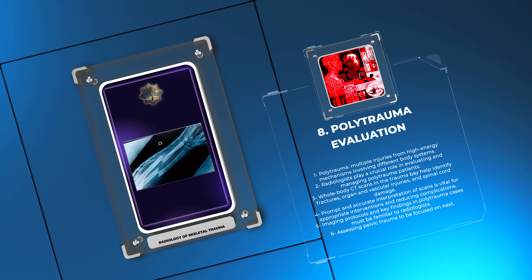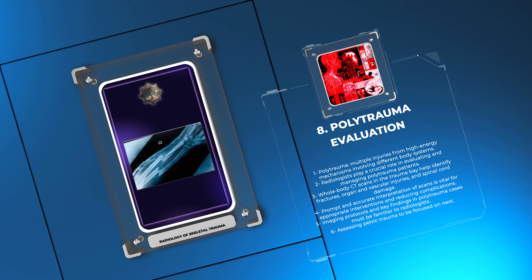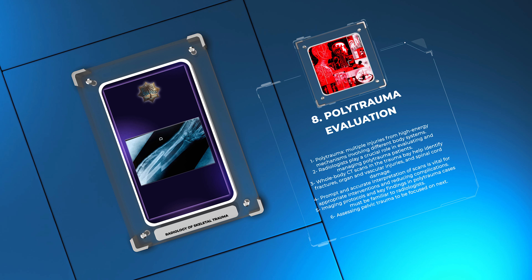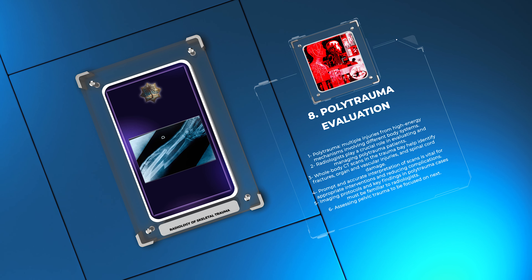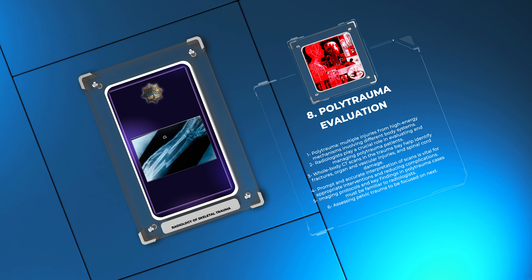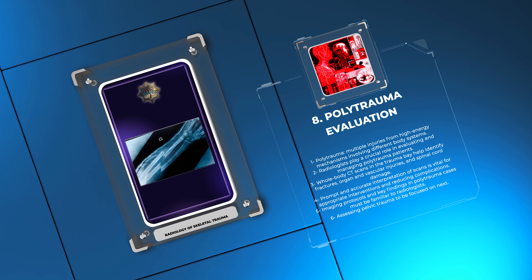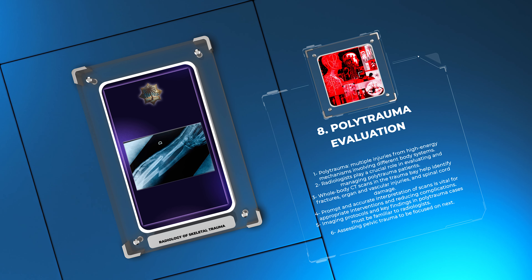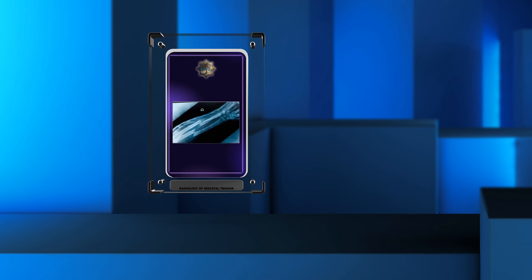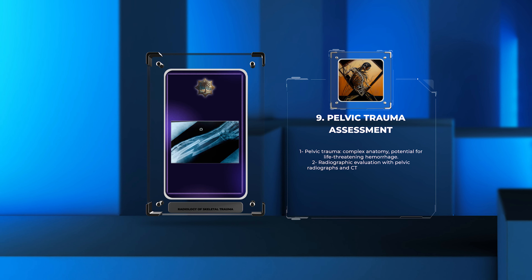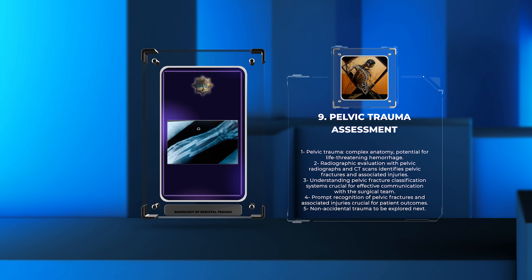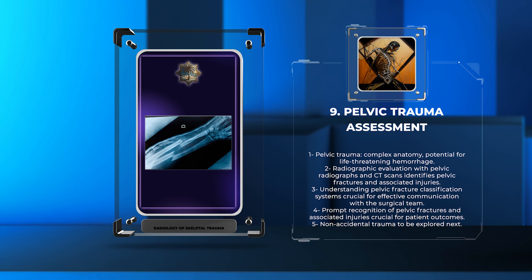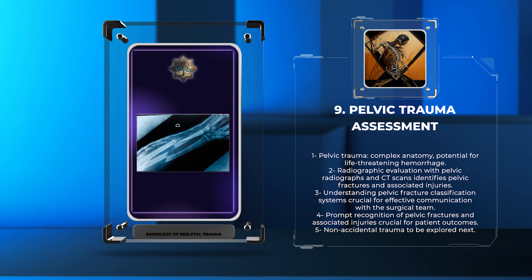We will explore various imaging techniques used in skeletal trauma. Radiographs are the initial imaging modality for fractures; however, other modalities such as CT, MRI, and ultrasonography have specific roles. CT is useful for complex and intra-articular fractures. MRI is valuable for soft tissue assessment and spinal cord injuries. Ultrasonography is mainly used in pediatric fractures and surface fractures. Radiologists need to understand the indications and limitations for each modality to provide optimal patient care.